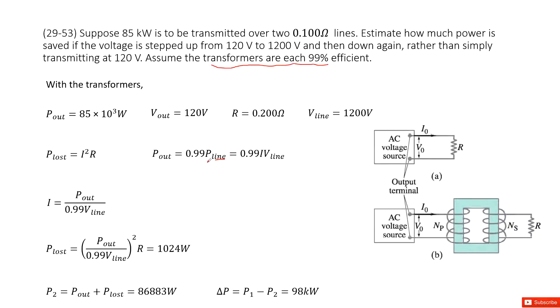So now we can see it. In this one, we list all the given quantities. V_out is still 120, but V_in is 1200 volts.